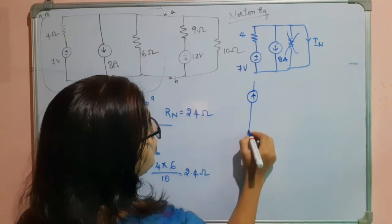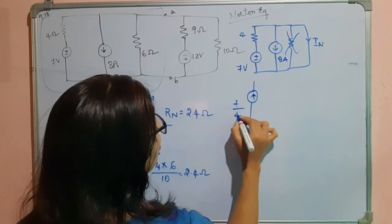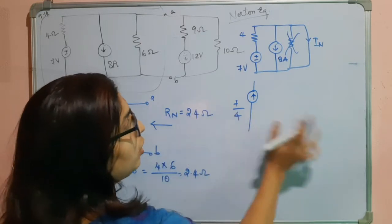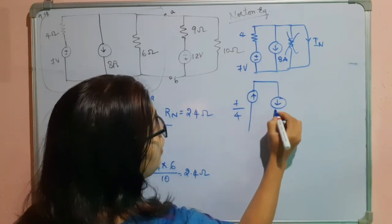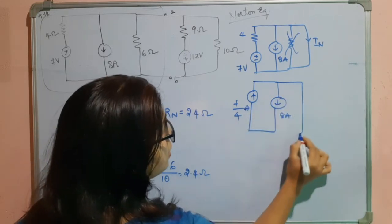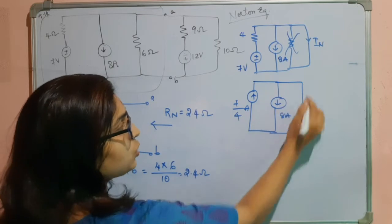Internally it will be pointing towards the positive terminal. So this is 7 by 4. Again, 4 will come in parallel which is again redundant, so I will not take the 4 ohms into consideration. Here we have 8 amperes. This is 7 by 4 amperes. This is a shorted current, this is actually a shorted path.